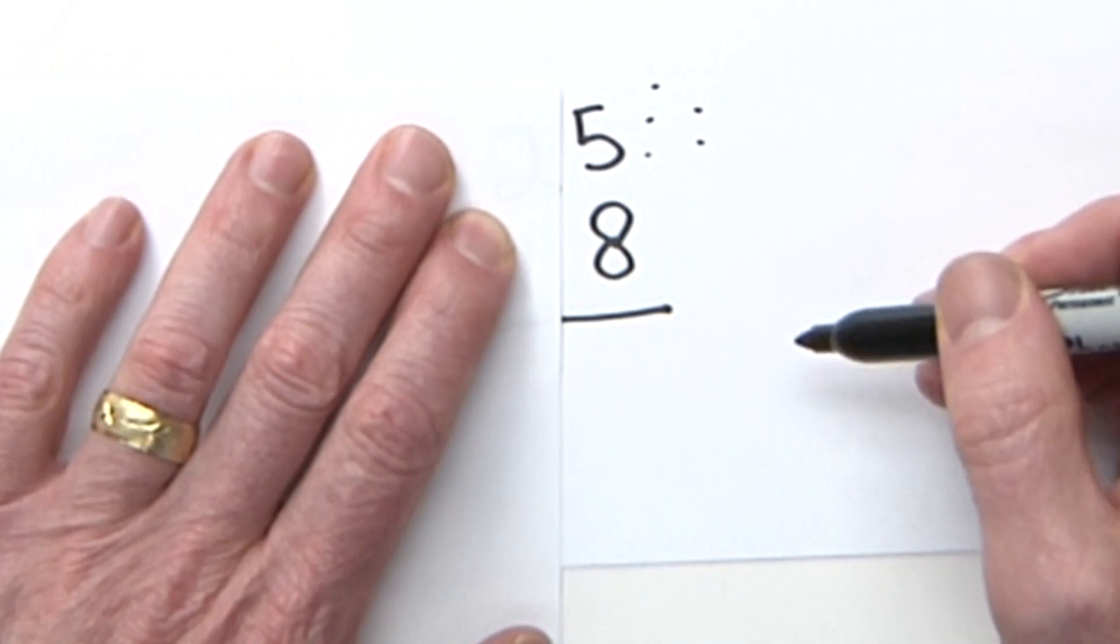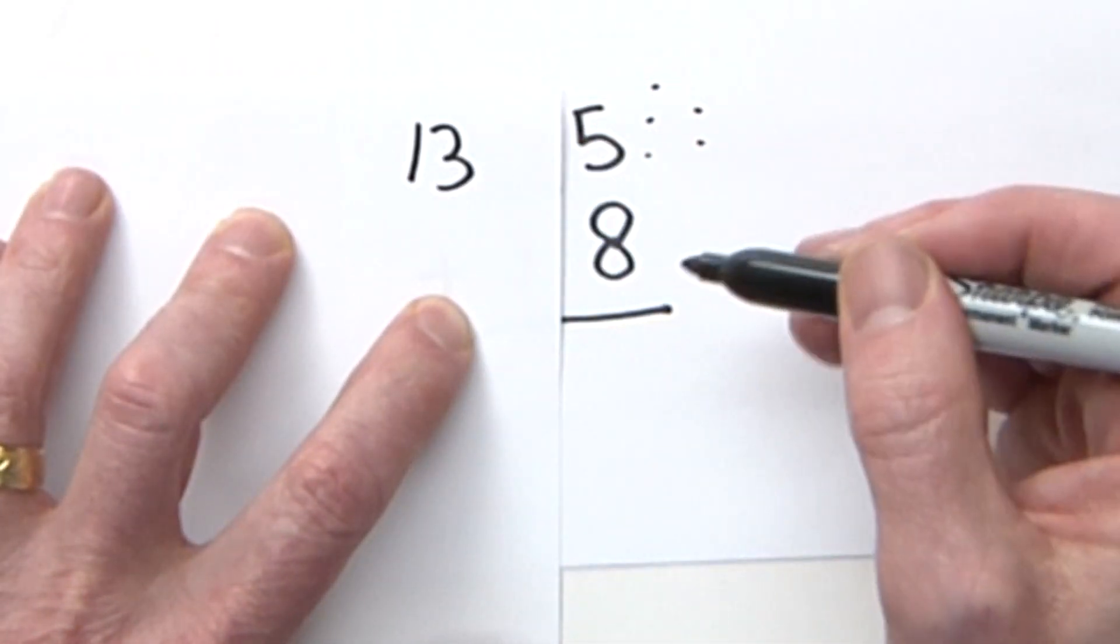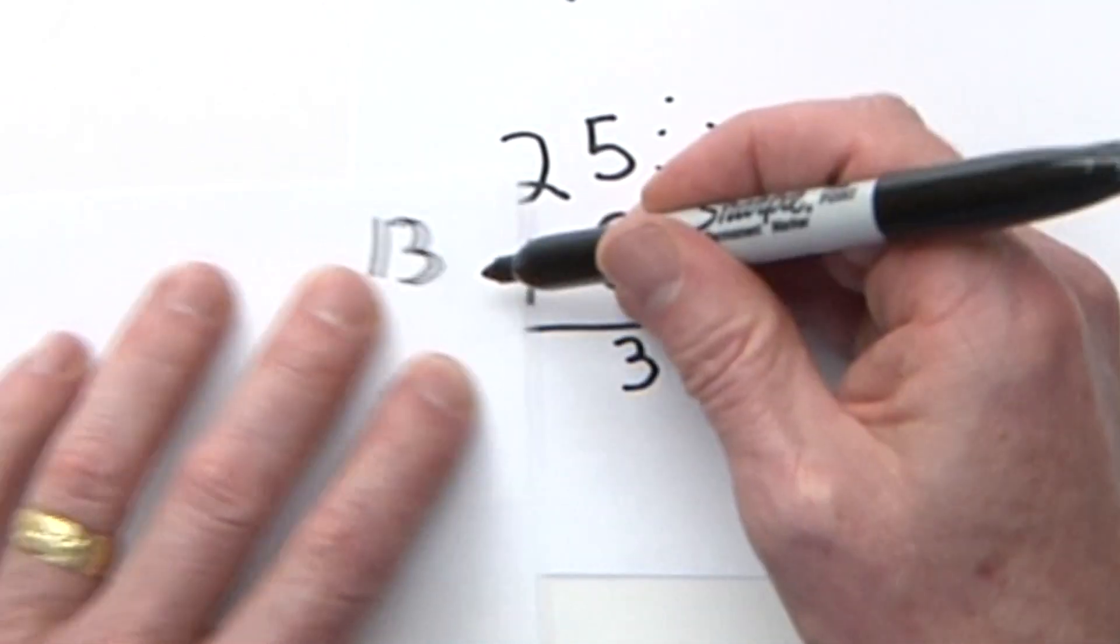Now 13 is going to look like this. I put the 3 here and I take that 1 and I put it on top in the tens place.